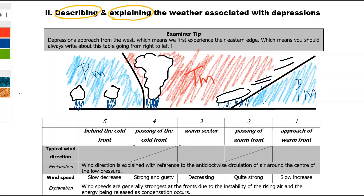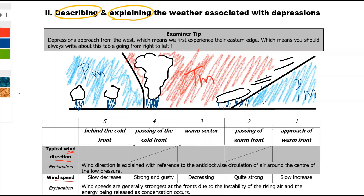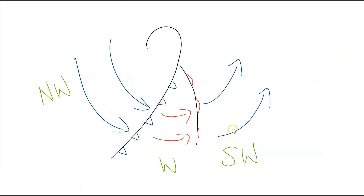Next up we'll look at wind direction and wind speed, again starting at number one. Approaching the warm front, the wind direction is coming from the southwest. Then in the warm sector it swings around to come from the west. After the cold front it swings around to come from the northwest. The reason for this is the anti-clockwise circulation of air around the centre of low pressure — initially coming from the southwest, then the west, then the northwest.